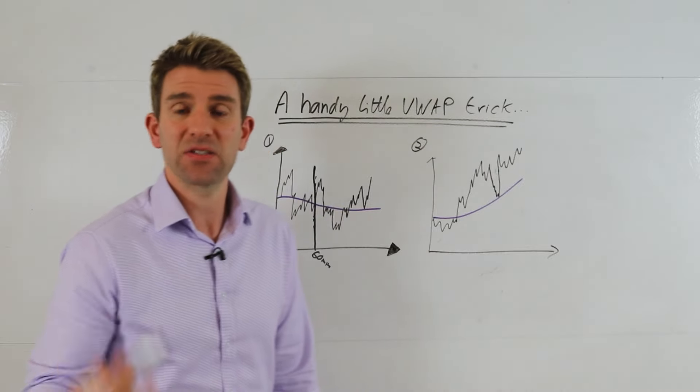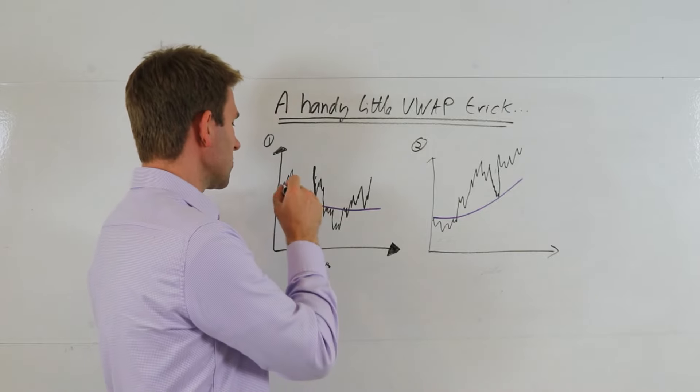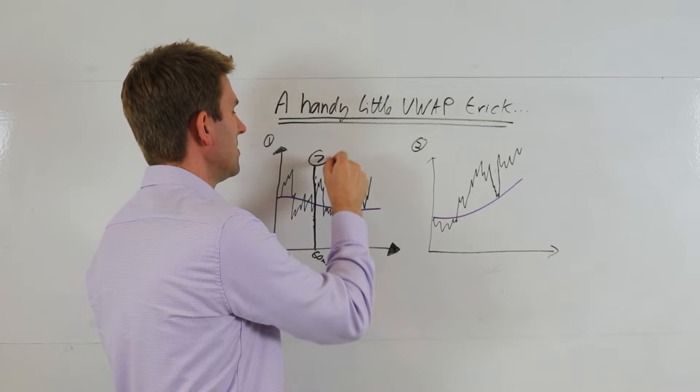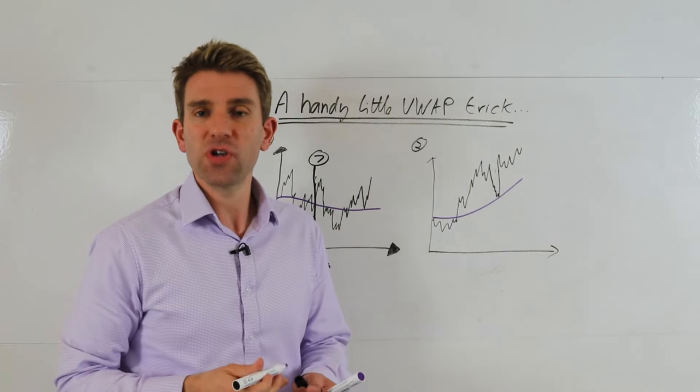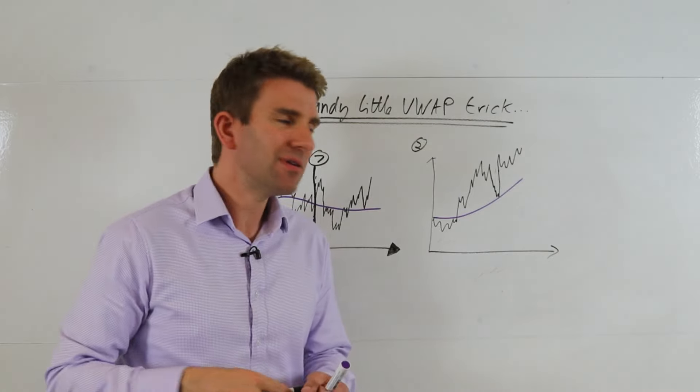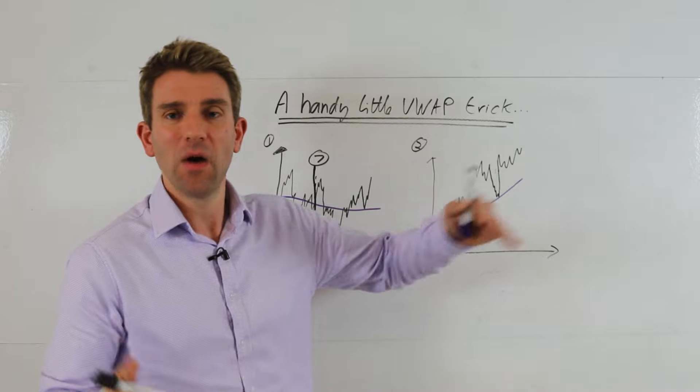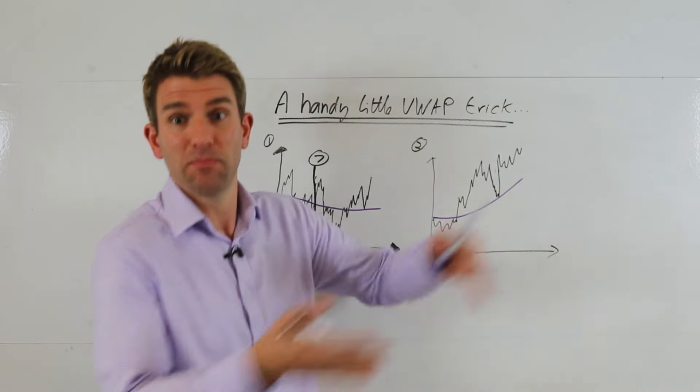You want VWAP to start at zero when the first trade goes at the bell. Now watch how many times it tags VWAP. The theory is that if it's tagging VWAP multiple times—like one, two, three, four, five, six, seven times—there's indecision, no real supply-demand shift.